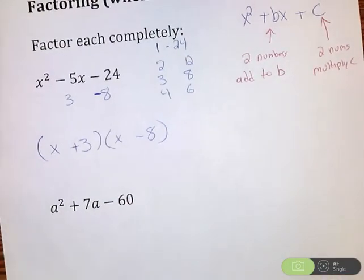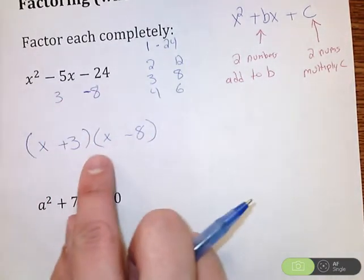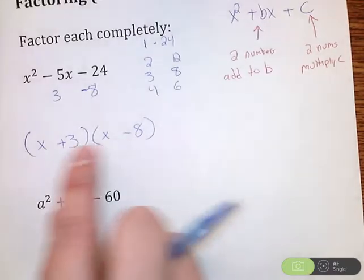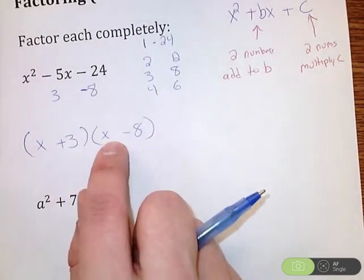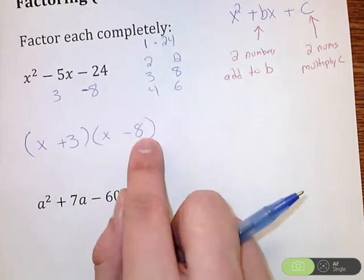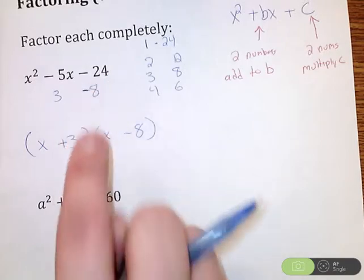Now, if I wanted to take the time to check my work and make sure I'm correct, this is factoring. The opposite of factoring would be taking these two and distributing them through. So taking the x times the x, the x times the negative 8, 3 times the x, 3 times negative 8. Combine like terms, and I'm going to get x squared minus 5x minus 24.